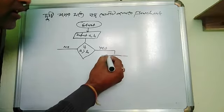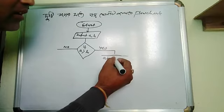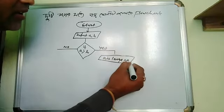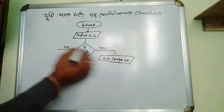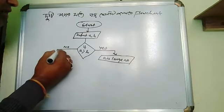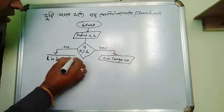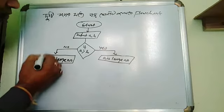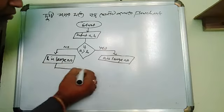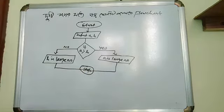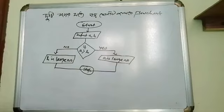If A is larger than B, output A is larger than B. If A is less than B, then B is larger than A.